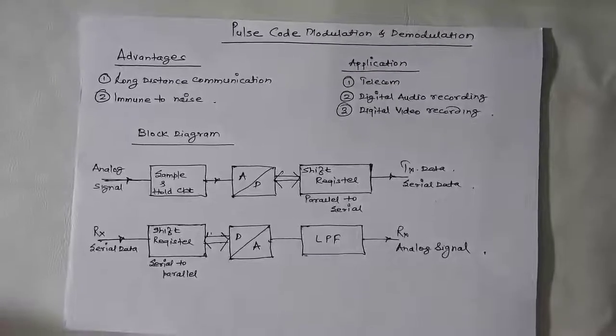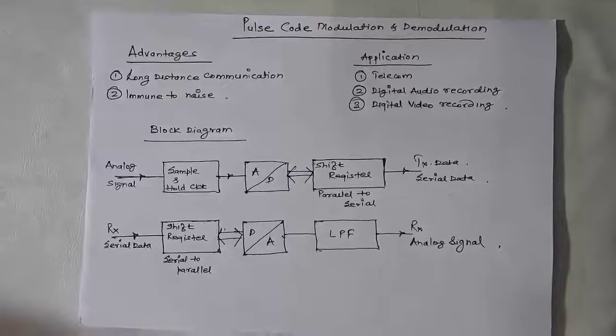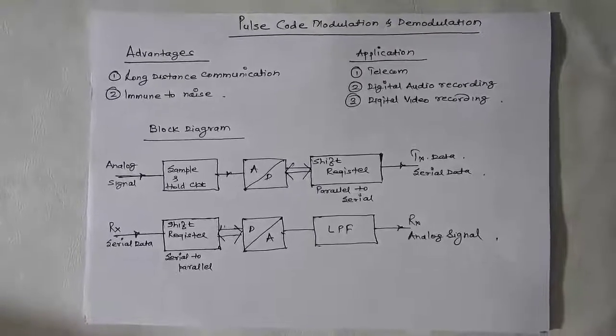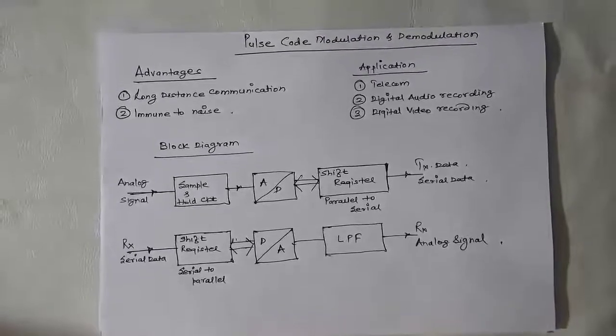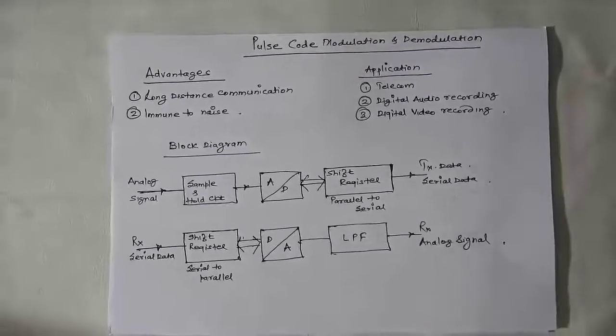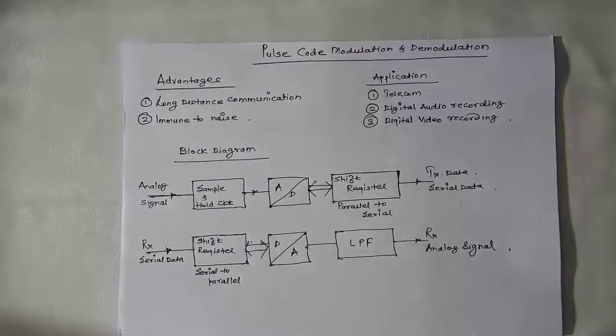Pulse code modulation gives an advantage over analog signal transmission and sampled signal transmission because it allows you to send the signal for long distances.